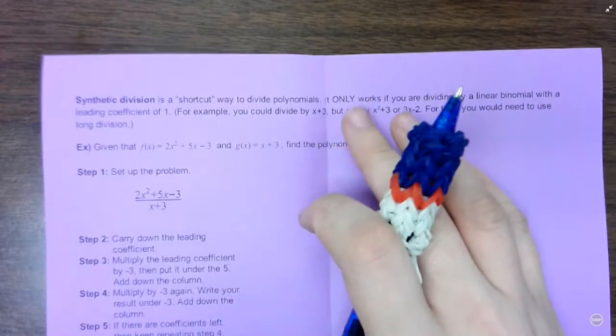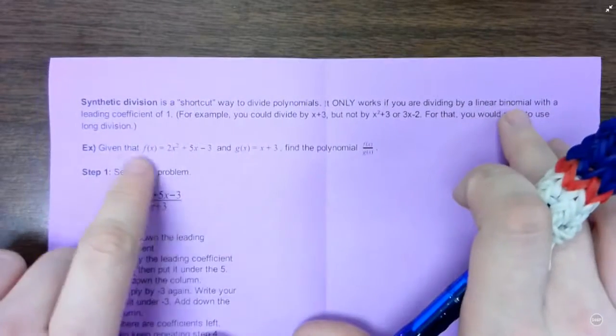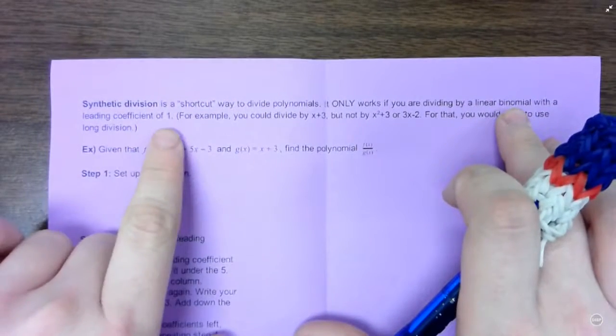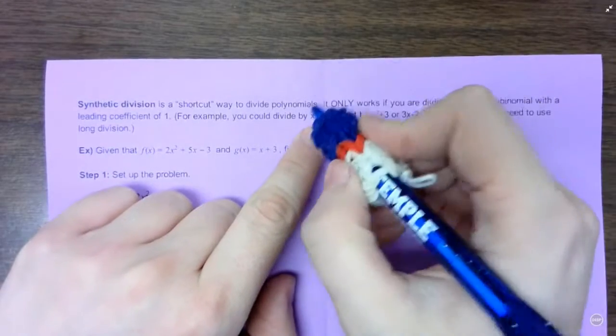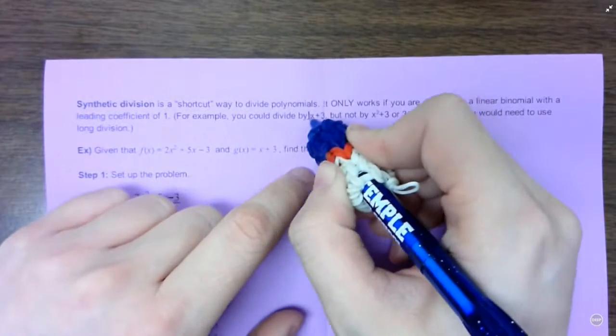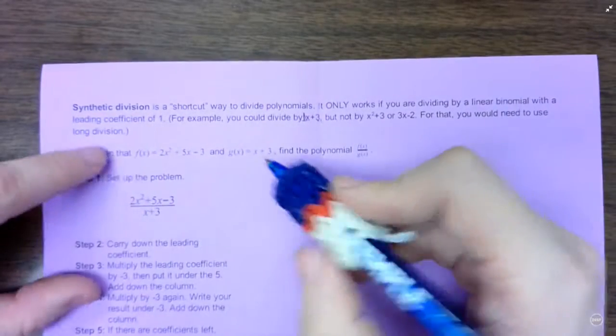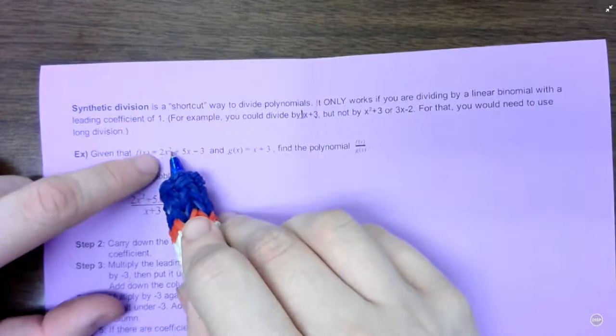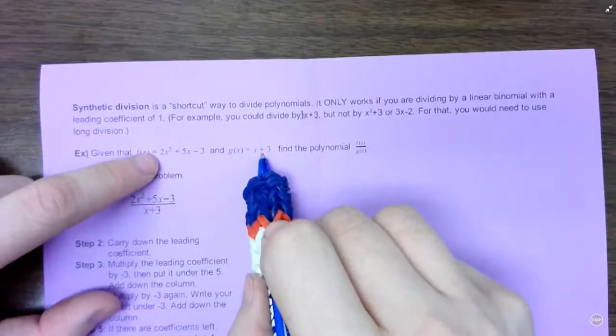But this shortcut way only works if you're dividing by a linear binomial with a leading coefficient of 1. So something like this, x plus 3, leading coefficient is 1, it's a 1x, and there's just two terms. So your dividend can be whatever you want, but your divisor has to be kind of like that.